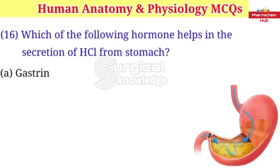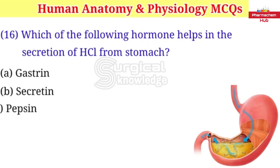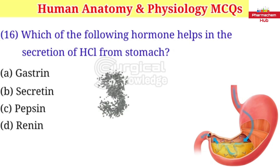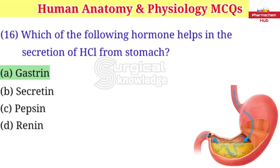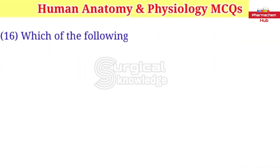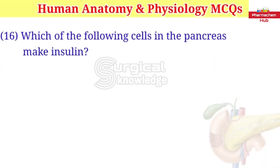Which of the following hormone helps in the secretion of HCl from the stomach? A. Gastrin B. Secretin C. Pepsin D. Renin. Right answer is gastrin.